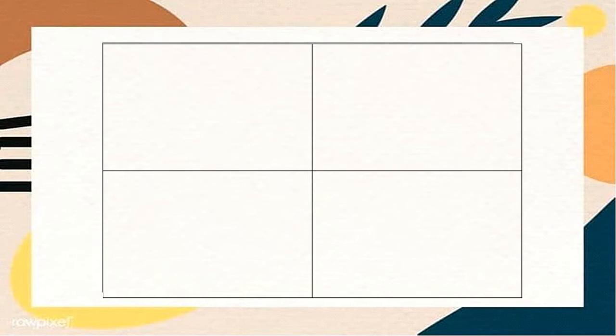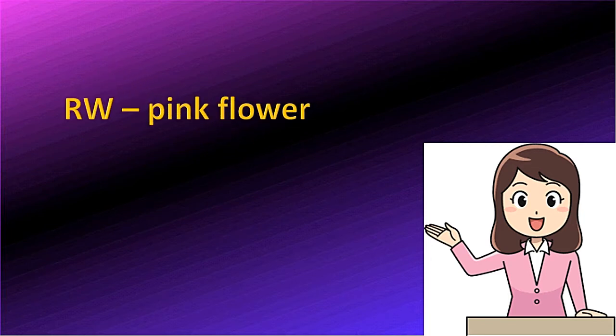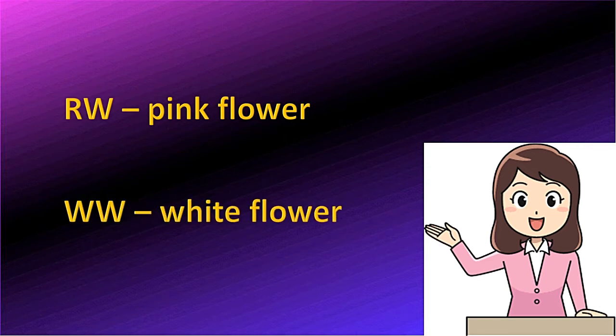First thing to do is to construct a Punnett square. After that, we are going to identify the genotypes of the parents. Remember, alleles are represented by letters. Two letters are used to represent a trait.